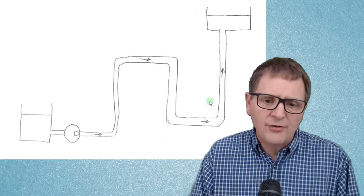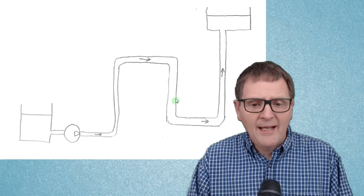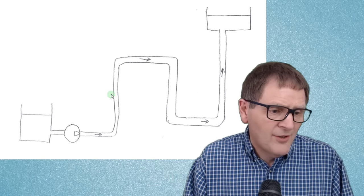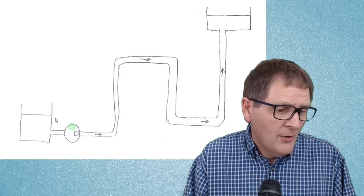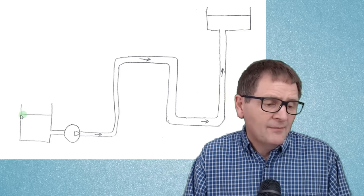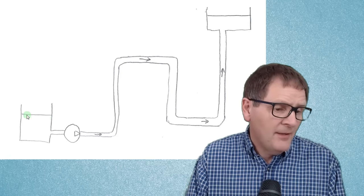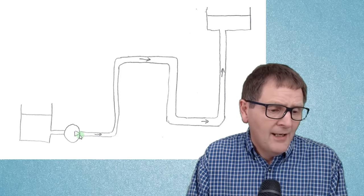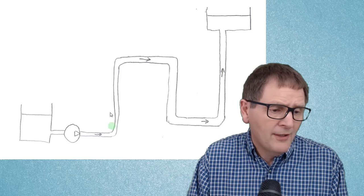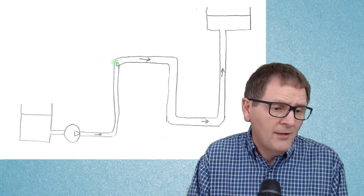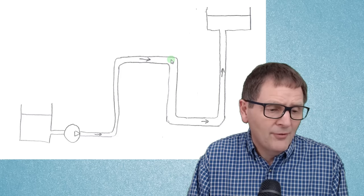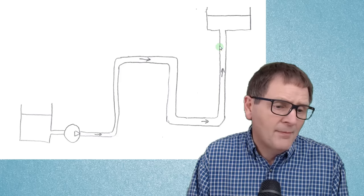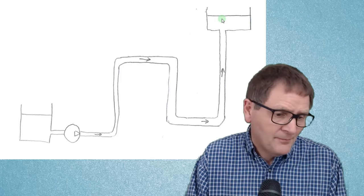This sketch shows a typical hydraulic or fluid system. We have a tank with fluid in it, with a pipe connected to a pump. Then the pipe goes along horizontally, then up, horizontal, down, horizontal, and then up to a header tank.